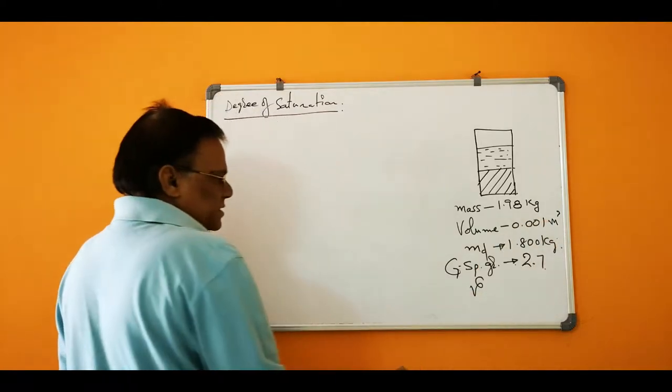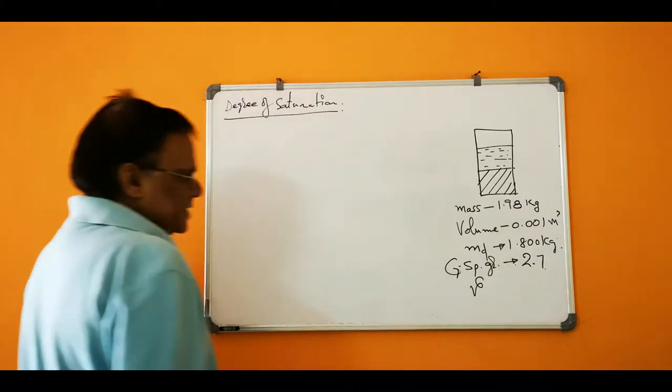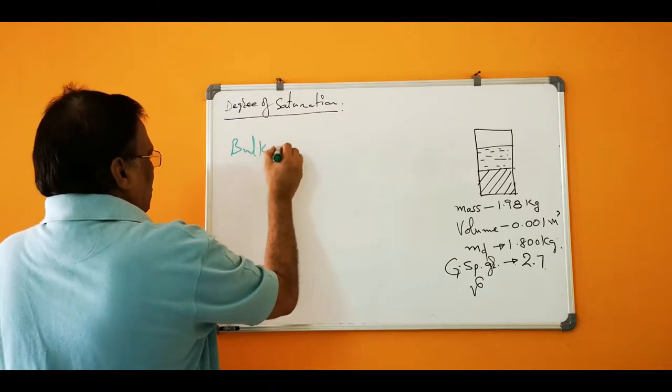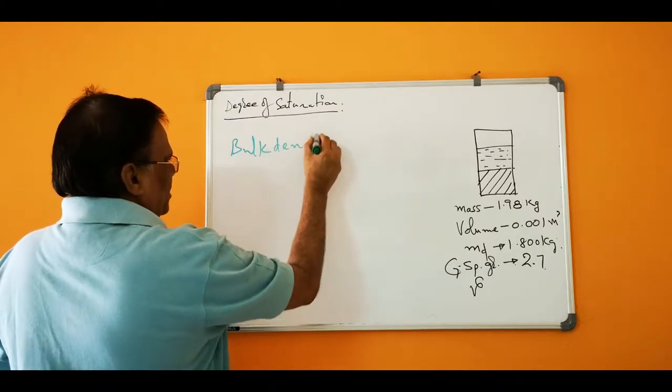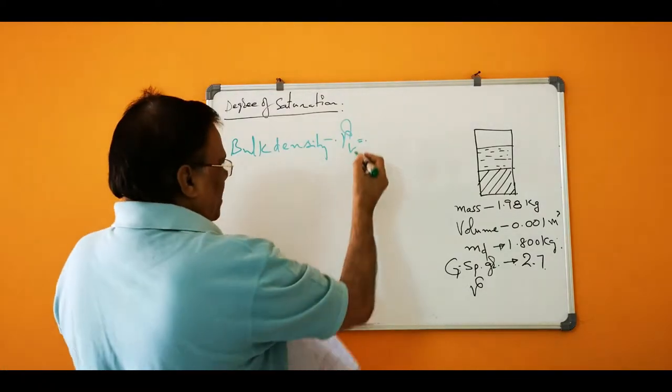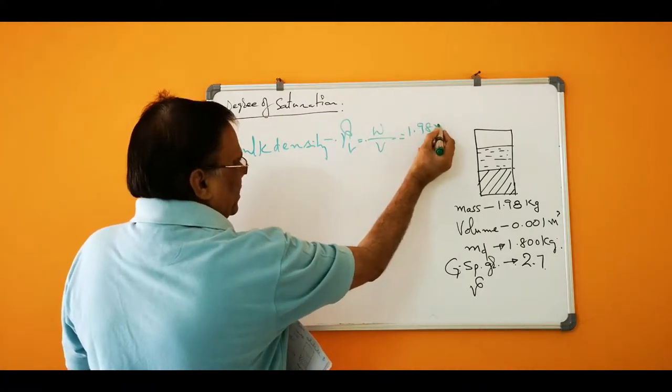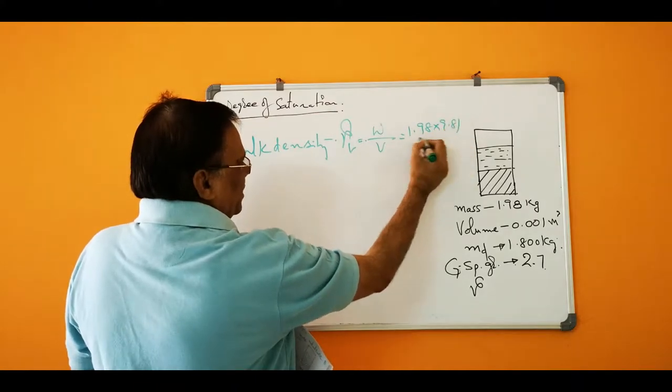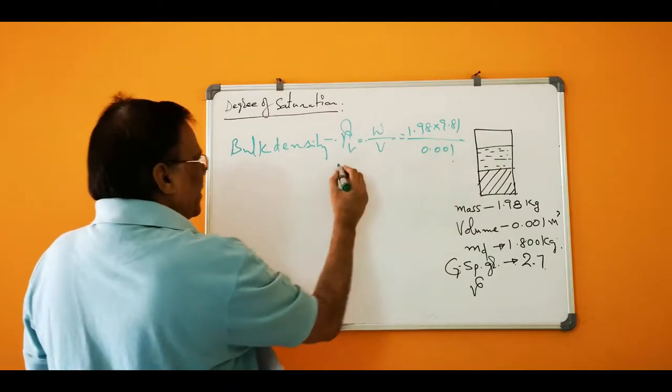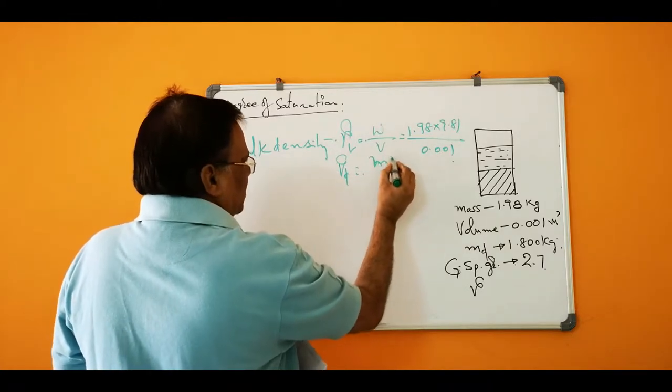is 1.8 kg, and specific gravity G is given as 2.7. So bulk density is equal to weight by volume, that is 1.98 into 9.81 divided by volume. So gamma dry is also equal to mass D by volume.